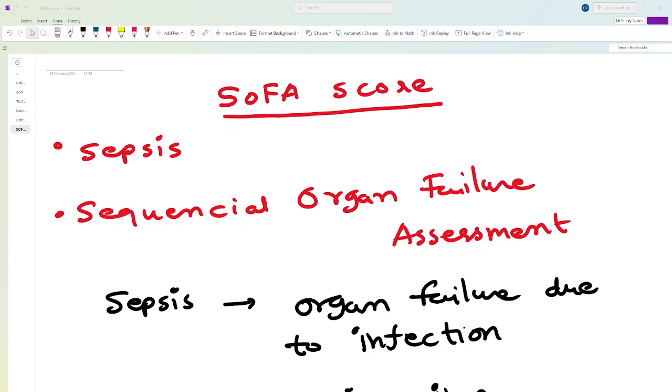Hello everyone, in this video we are going to talk about this particular score called SOFA score. Now I know the name is funny but it's very important. This score is used to measure sepsis, which is a very serious condition.